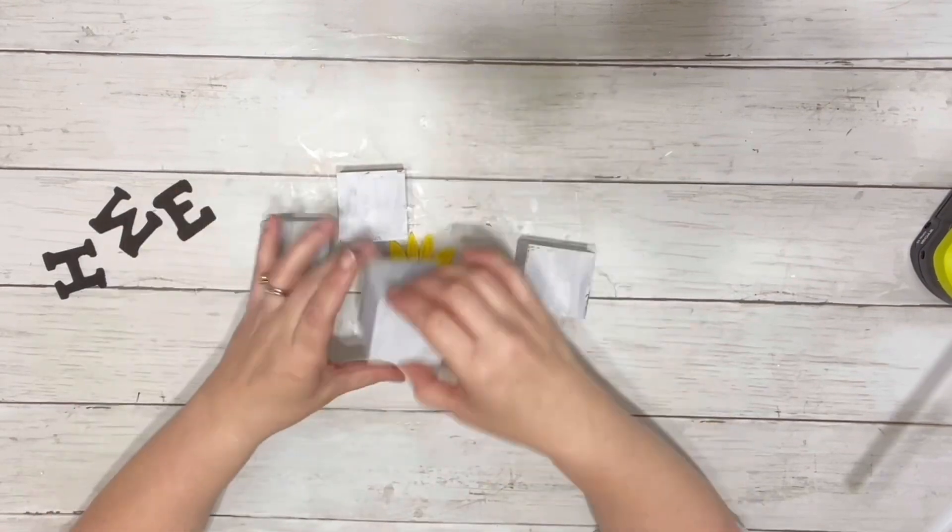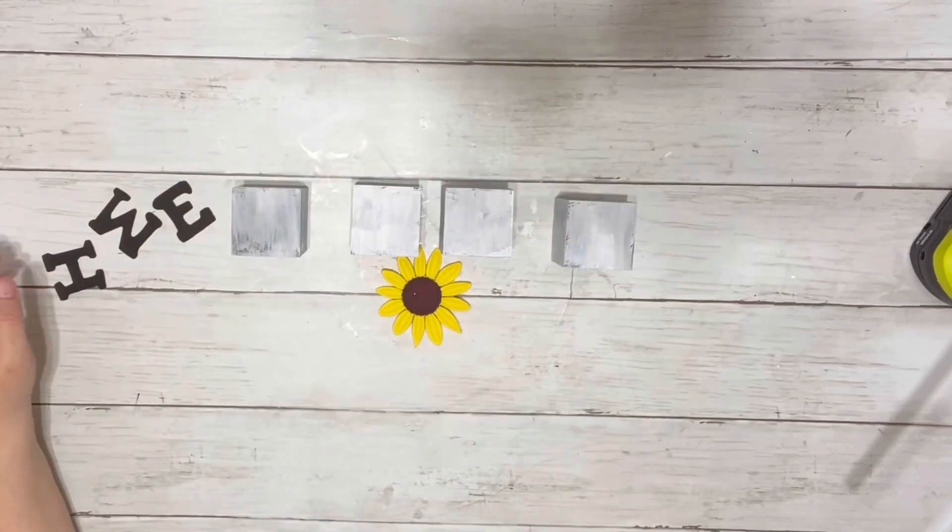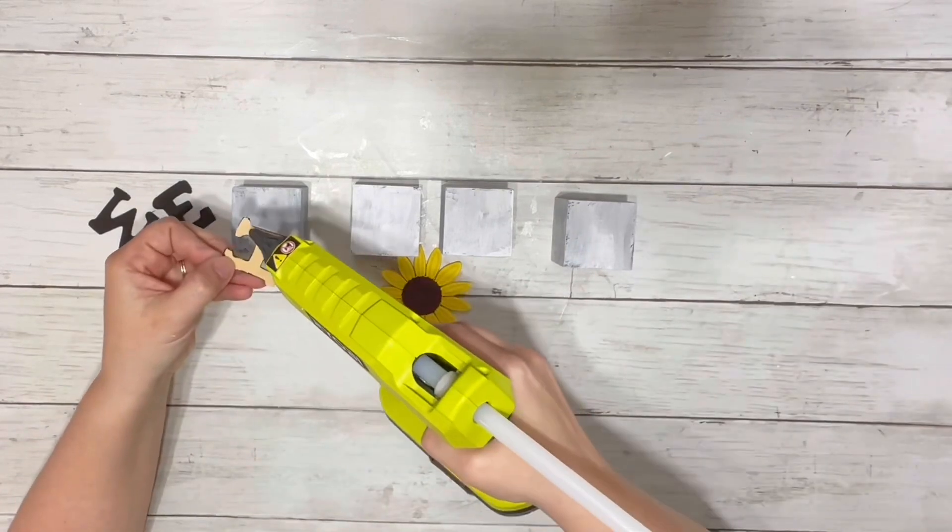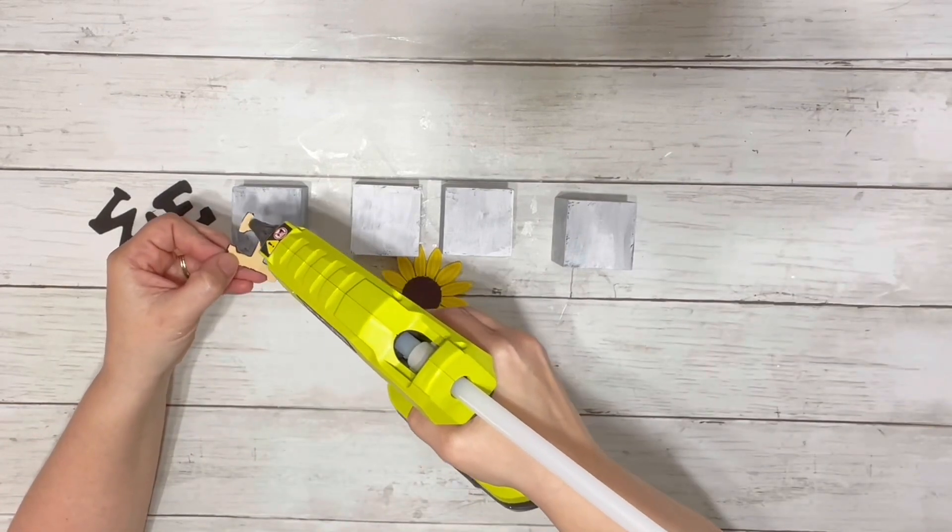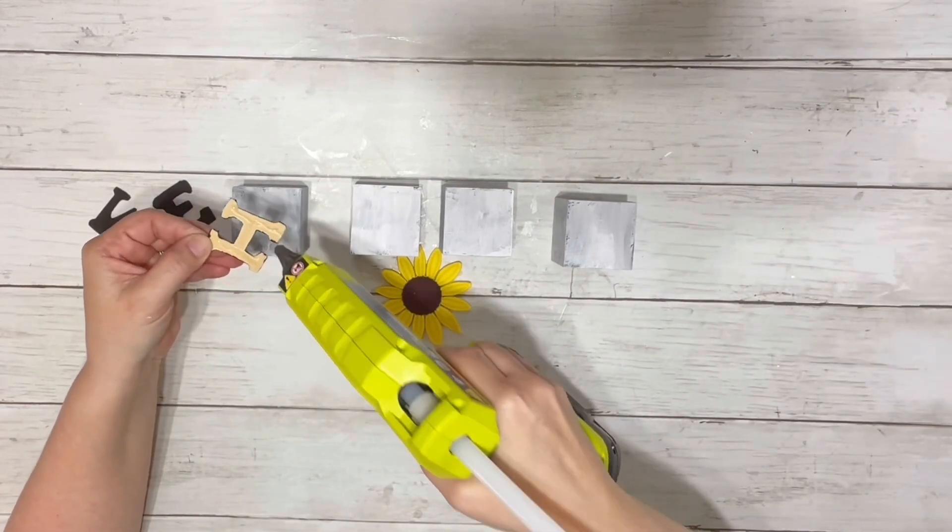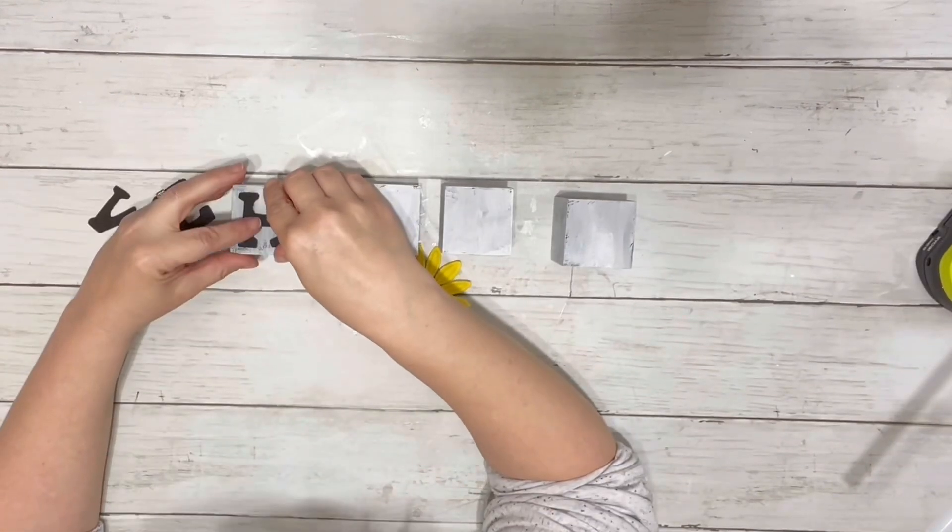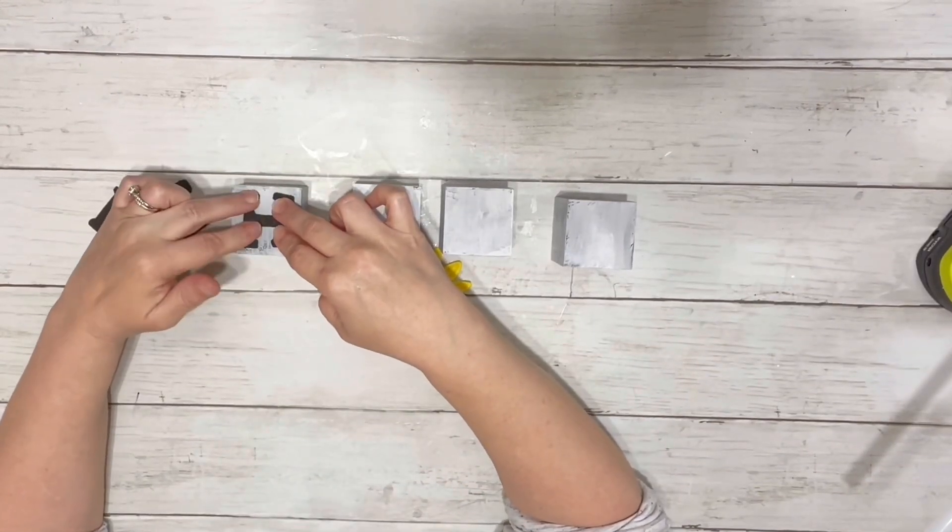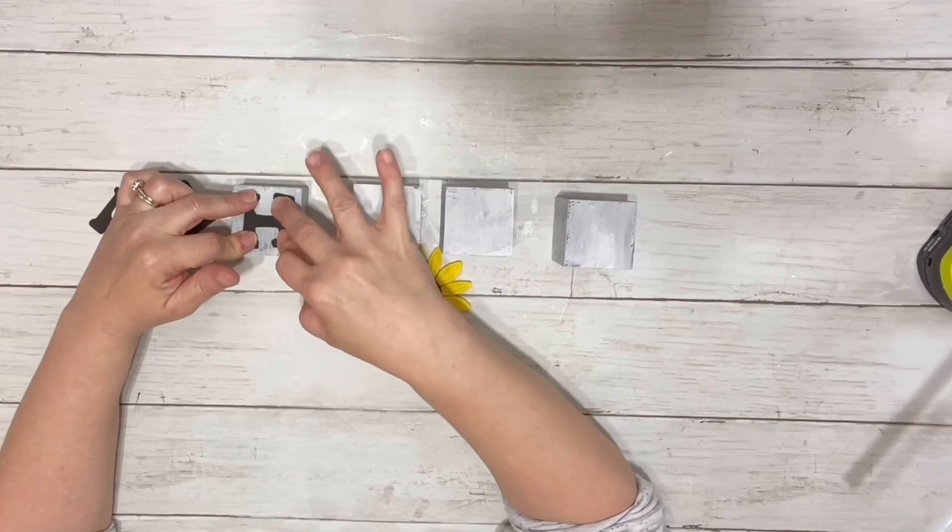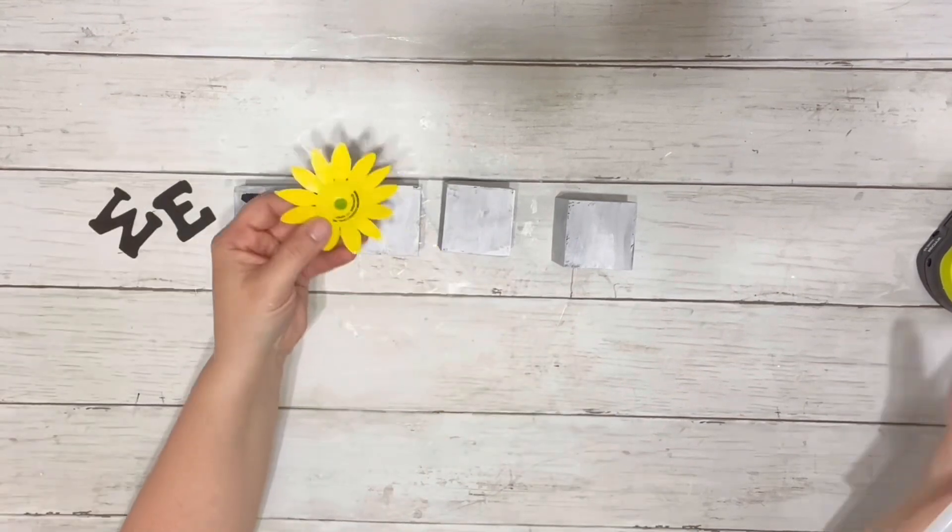Then I decided on which sides of the dice I liked better, which ones would be showing in the front. I hot glued the back of each of my letters and placed those down, and then placed down the sunflower on one of them using hot glue as well.